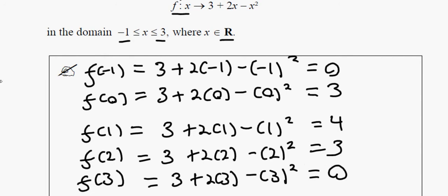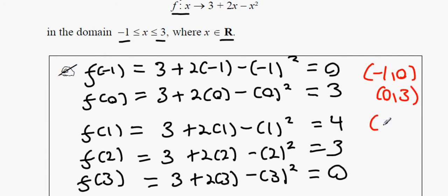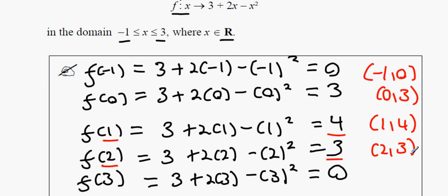Now write down all the points. The first point is (-1, 0). The point after that is (0, 3). Then (1, 4) — because it's whatever number comes in followed by the answer. Next is (2, 3) and then (3, 0).